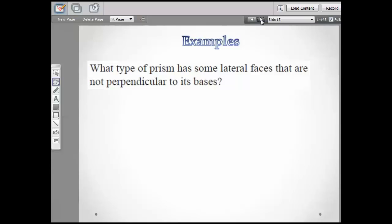What type of prism has some lateral faces that are not perpendicular to its bases? Remember, if all of the faces are perpendicular to the base, you're going to have a right prism. So if they're not perpendicular, you'll have an oblique prism. That means it's leaning one way or the other.